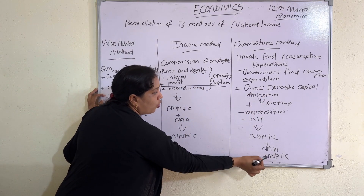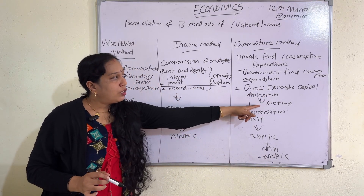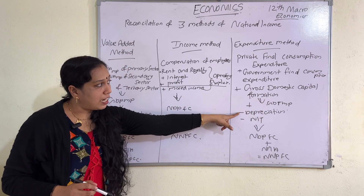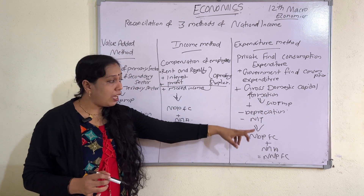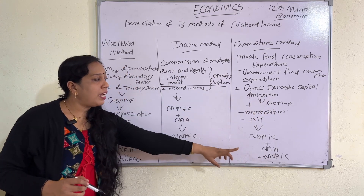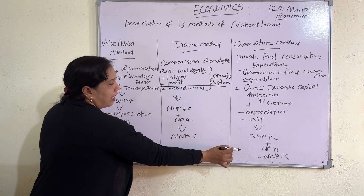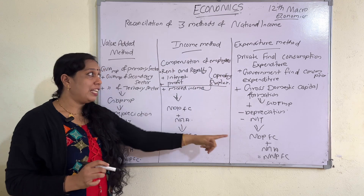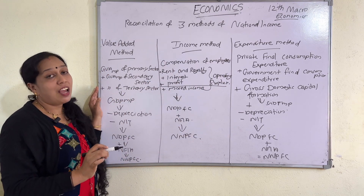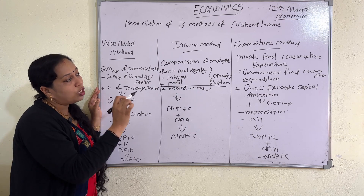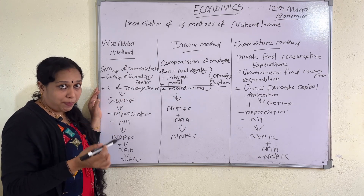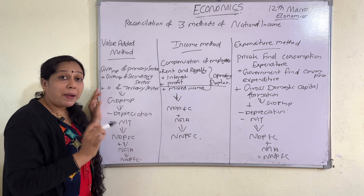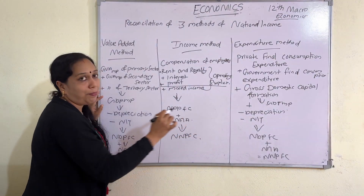To convert GDPMP to NNPFC: GDPMP minus depreciation gives NDPMP; minus NIT gives NDP at FC; plus NFIA gives NNPFC. So the full expenditure method formula is: private final consumption expenditure plus government final consumption expenditure plus gross domestic capital formation equals GDPMP, minus depreciation, minus NIT gives NDPFC, plus NFIA gives NNPFC, which is the national income.